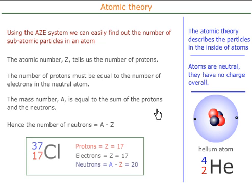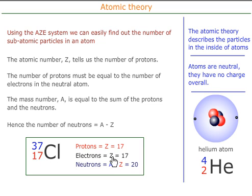There's an example with chlorine. Chlorine has got a mass of 37 and an atomic number of 17. So there are 17 protons, and hence 17 electrons — they must always be equal to cancel out. And the number of neutrons will be 37 minus 17, which is 20.